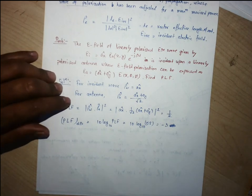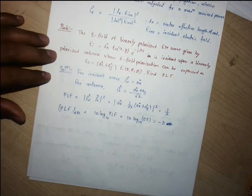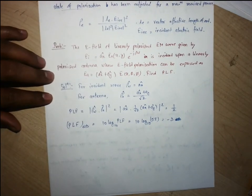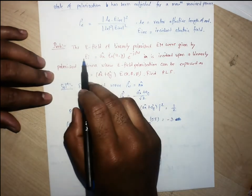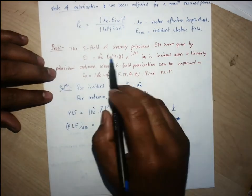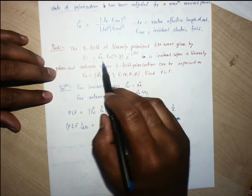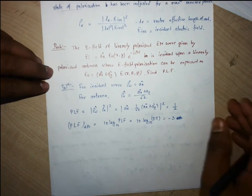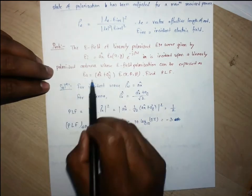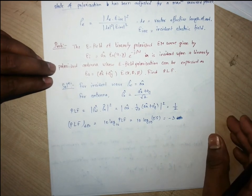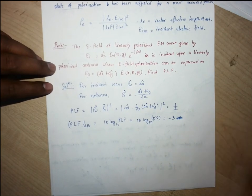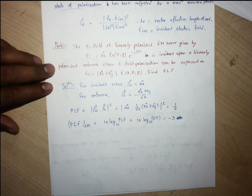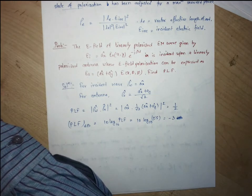So the PLF is −3 dB. The key is to identify the polarization unit vectors from the given field expressions for both the incident wave and the receiving antenna, then compute their dot product squared to find the polarization loss factor.